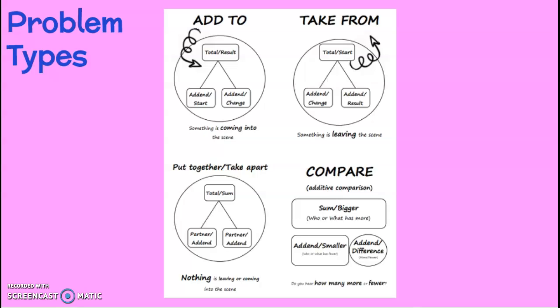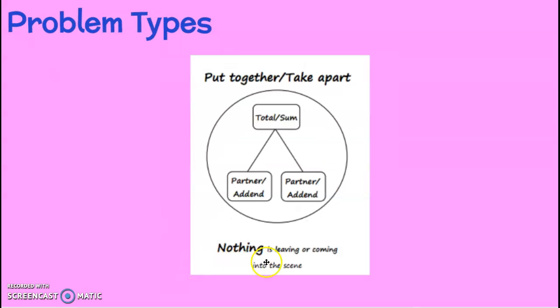So, put together, take apart: nothing is leaving or coming into the scene. We might have two different colors or sizes of something, maybe different categories. We know the total and we know how many of one category, and we need to figure out the other category. Maybe the categories are different kinds of zoo animals — we know how many male elephants there are and the total, and we need to find how many female elephants. Nothing is coming or leaving; we're just putting together and taking apart the numbers within that math mountain. Grab your whiteboard, page 43 in your math books, and get ready with a pencil, marker, and all your supplies.